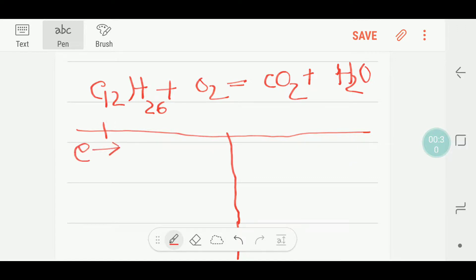At first, on the left hand side we have 12 carbon and we have 26 hydrogen, and we have only 2 oxygen. On the right side we have 1 carbon, we have 2 hydrogen, and we have 2 plus 1, that is 3 oxygen.